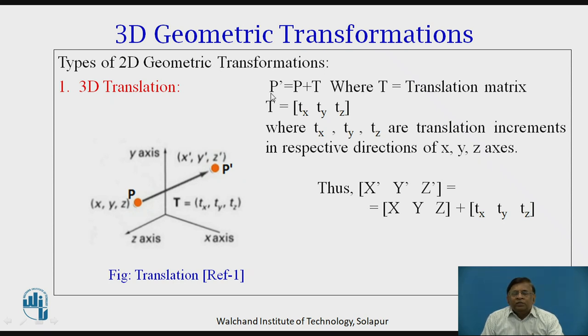With this basic relationship for translation, we have this relation, wherein P dash, which is x dash, y dash and z dash representing this particular point, is equal to x, y, z, the original coordinates of the point in 3D.